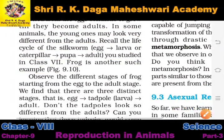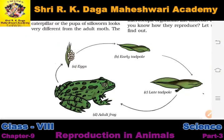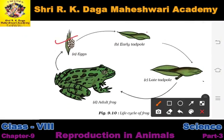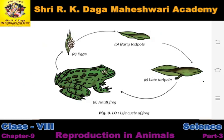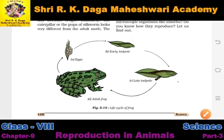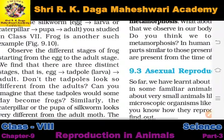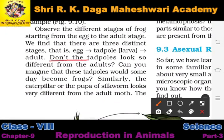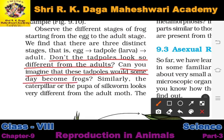Frog is another such example. In a frog's life cycle, there is first an egg, which gets fertilized by sperm. Then an early tadpole forms, then a late tadpole, and as it develops further it transforms into a frog. In the early stage and the final stage, the frog looks completely different. Don't the tadpoles look so different from the adults?